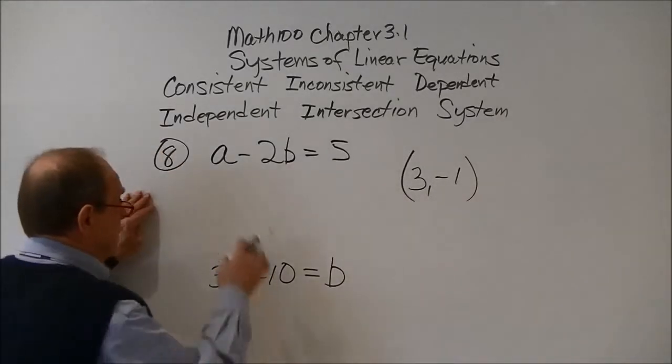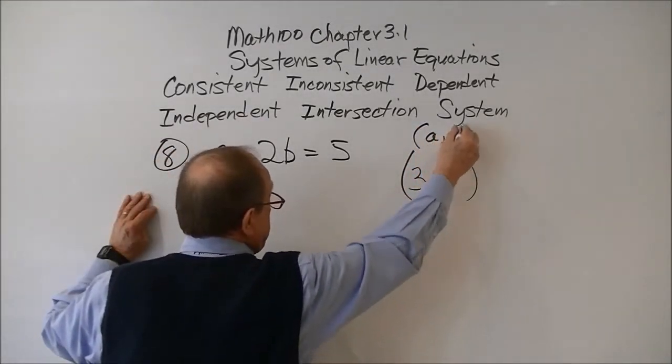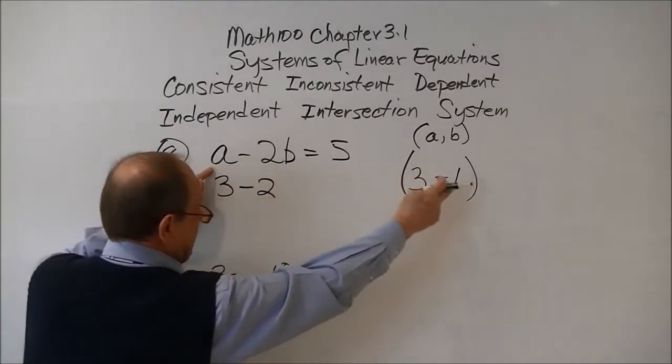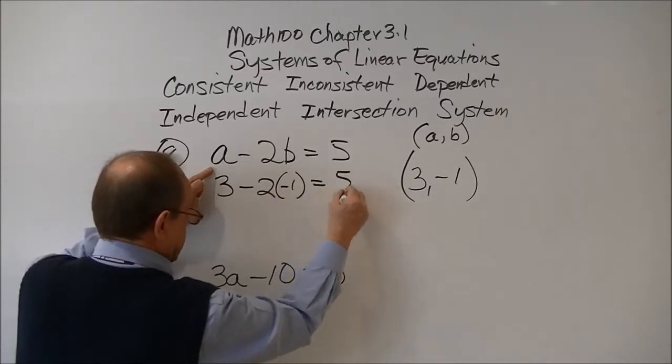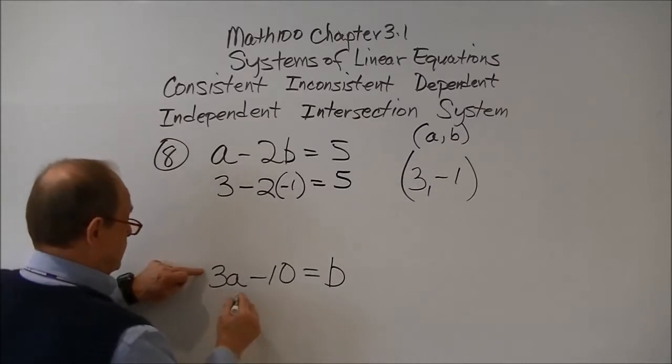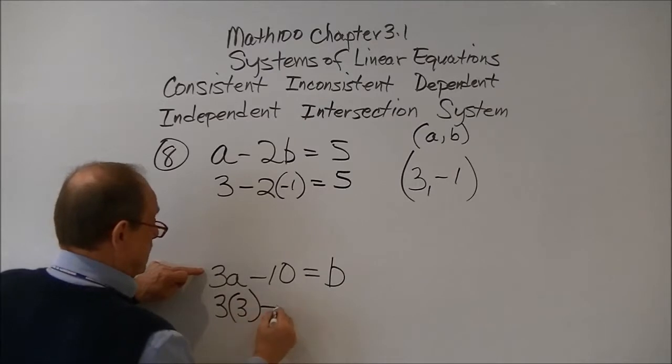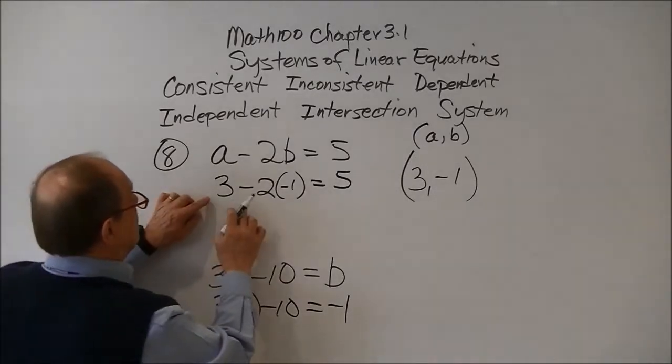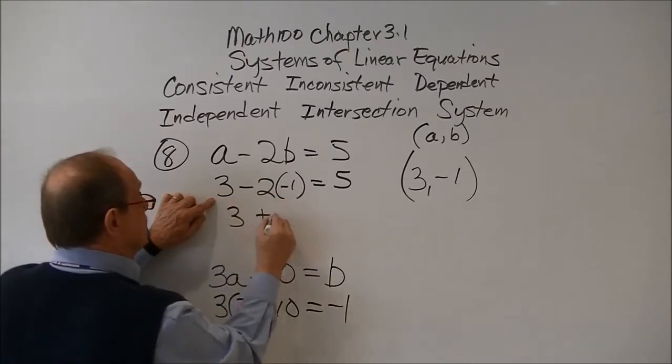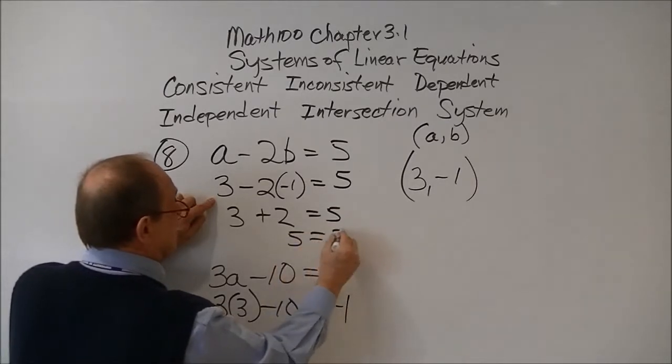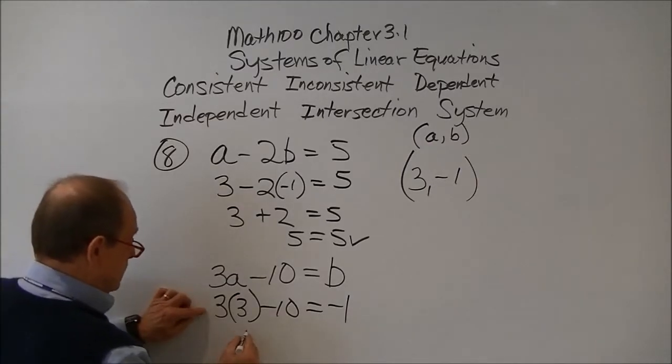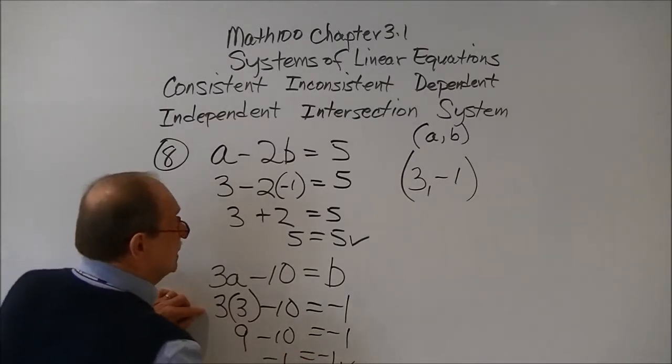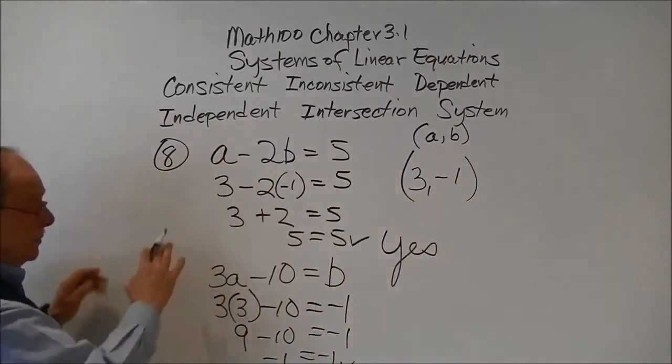For number eight, the same thing. Notice this ordered pair is written as a comma b. a would be 3 minus 2, and b is negative 1 equals 5. And this is 3a, so 3 times 3 minus 10 equals negative 1. This becomes 3, negative 2 times negative 1 is plus 2, 5 equals 5. That checks. And 9 minus 10 equals negative 1. Negative 1 equals negative 1. So this is a point of intersection for these two lines.